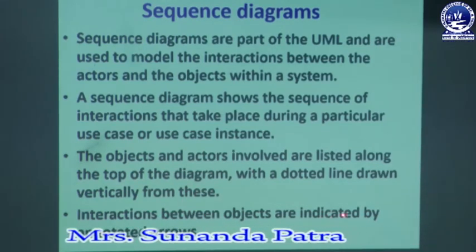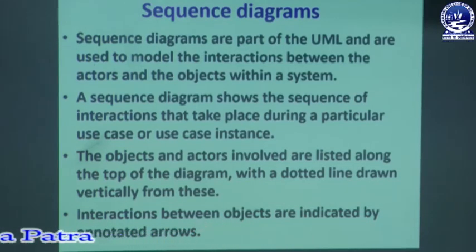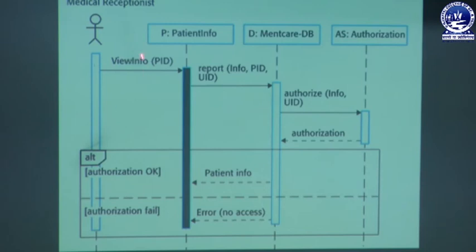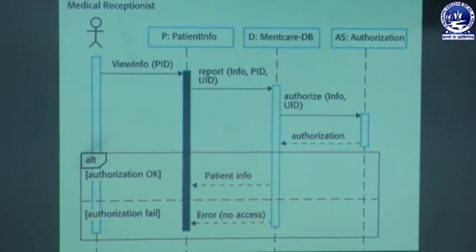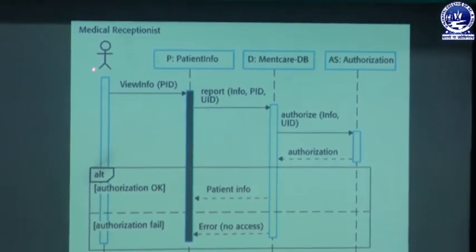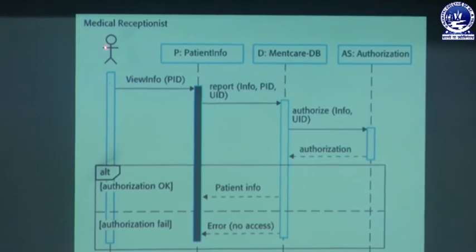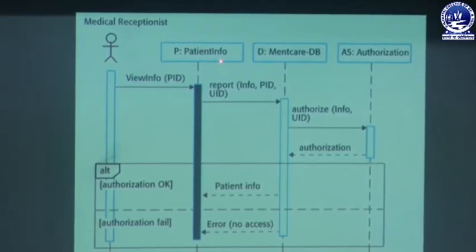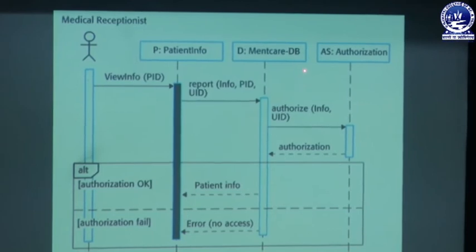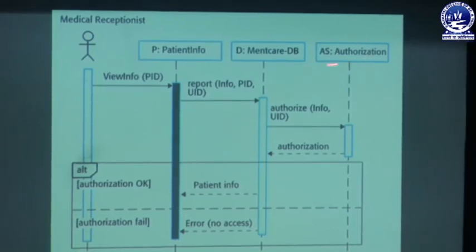Let's look at the sequence diagram for view patient information. Here the actor is the medical receptionist, and the objects are patient information, the main care database, and authorization. These actors and objects are listed on the top of the diagram.